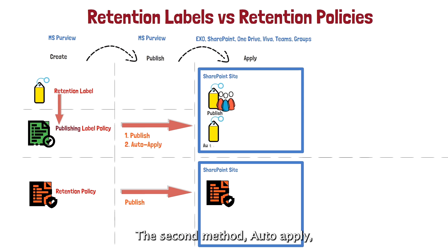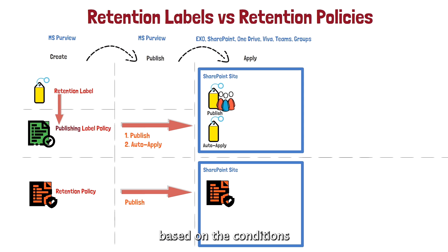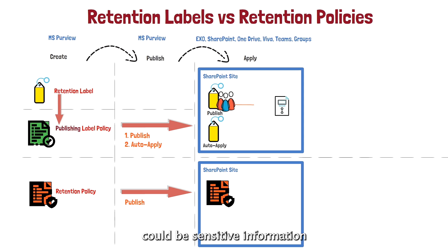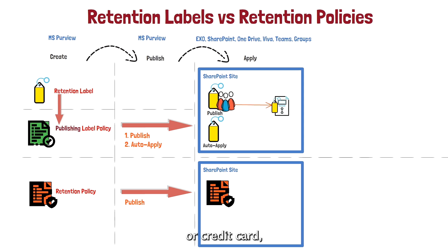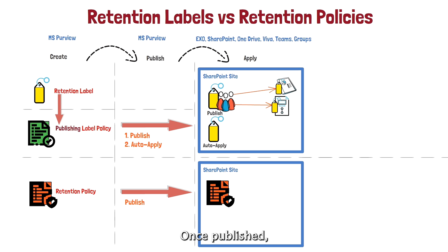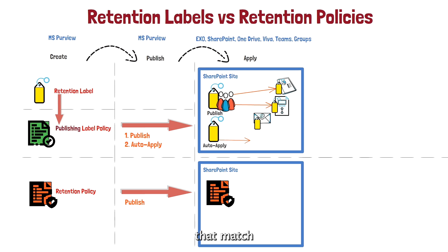They are published so that the user can manually apply the labels to the documents. The second method, auto-apply, will automatically apply the retention label based on the conditions specified in the publishing policy. A condition could be sensitive information, like a passport number or credit card, or it could be a keyword. Once published to SharePoint, a retention label will only be applied to documents that match the specified condition.